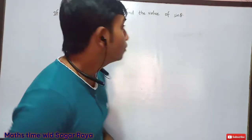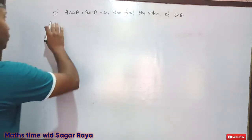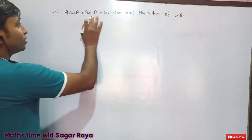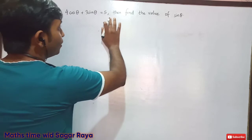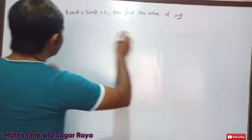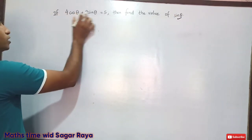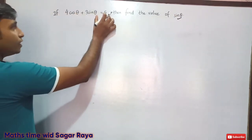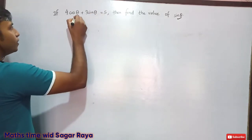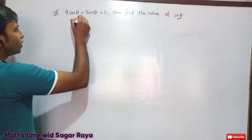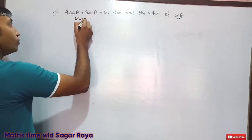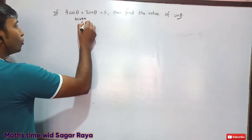Now without any delay, let's go through the question. In the question, if 4 cos θ plus 3 sin θ is equal to 5, then we have to find the value of sin θ. So we will start from the given portion: 4 cos θ + 3 sin θ = 5.